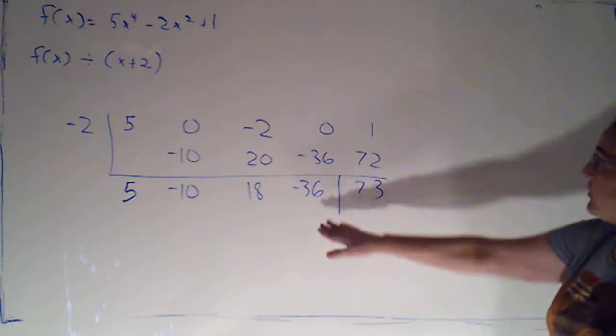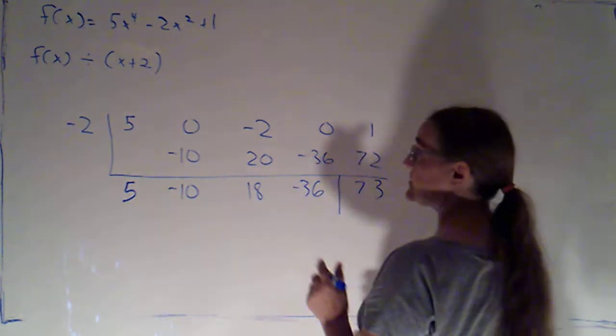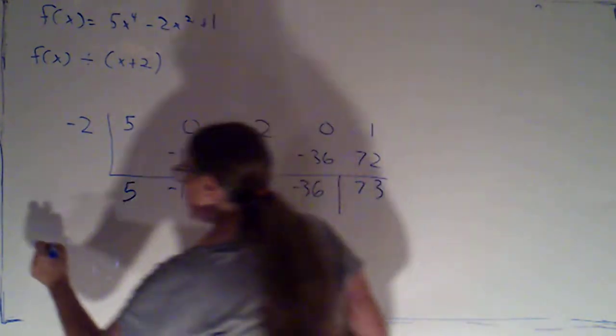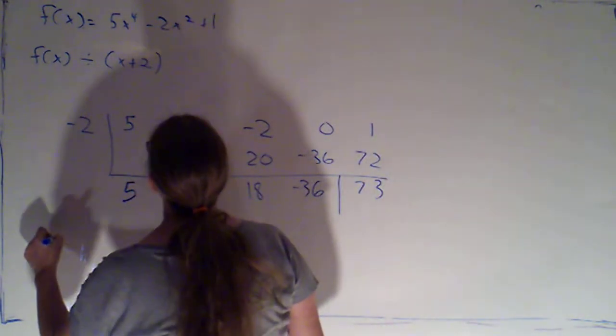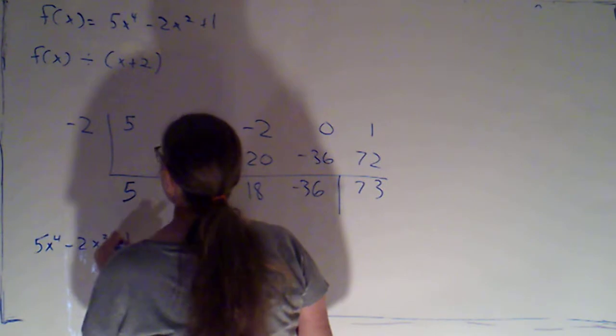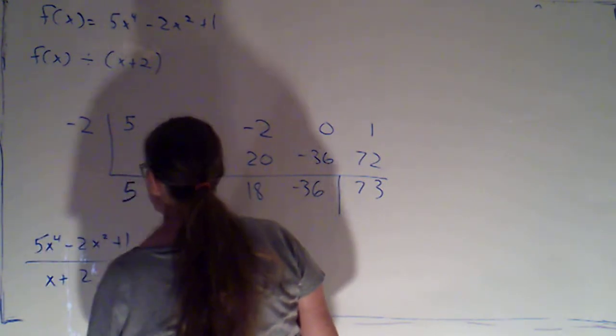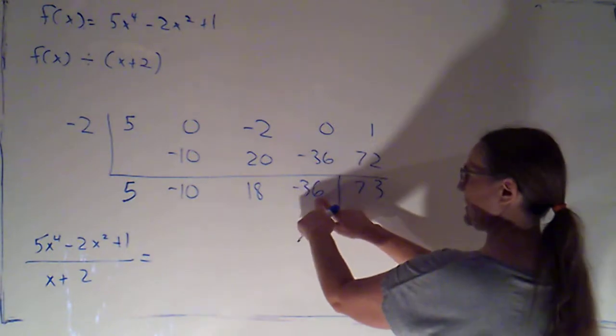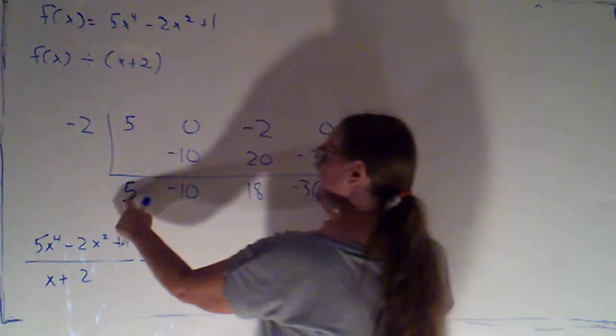So we're able to now say that our answer, f of x divided by x plus 2, we can actually just write that out as a fraction. 5x to the 4th minus 2x squared plus 1 divided by x plus 2. We can say that that's equal to, let's see, this is constants, x, x squared, x cubed.